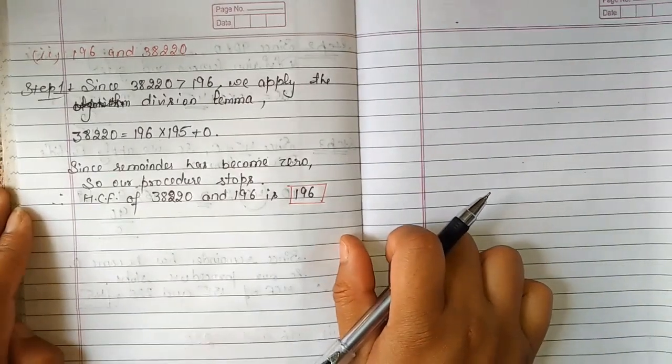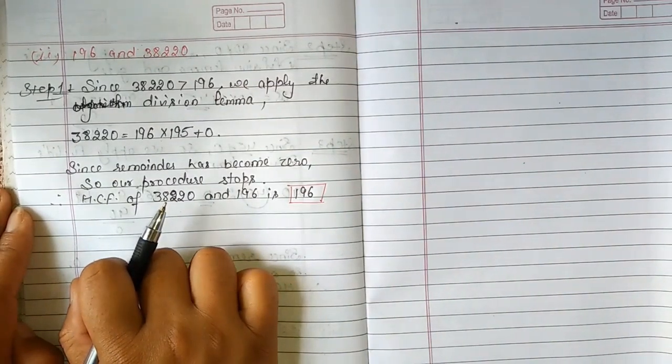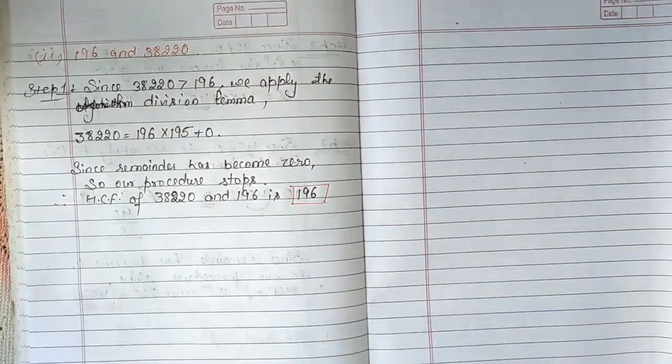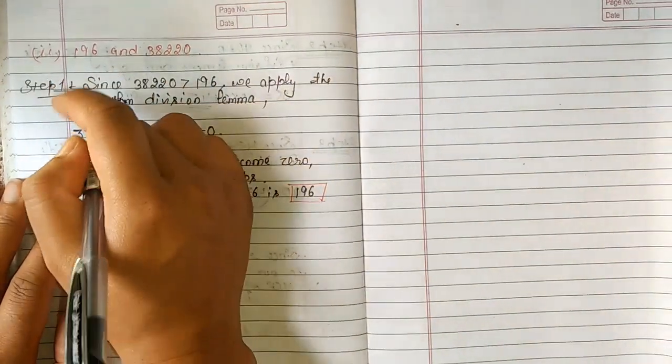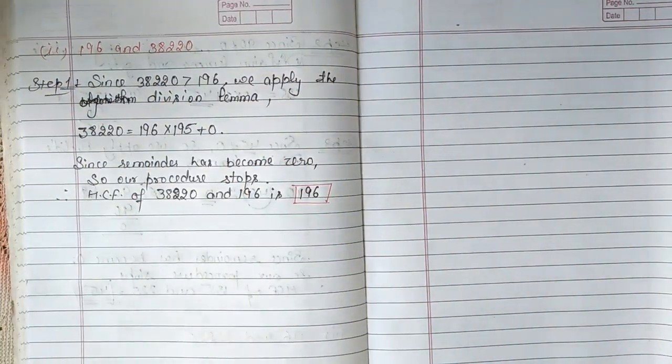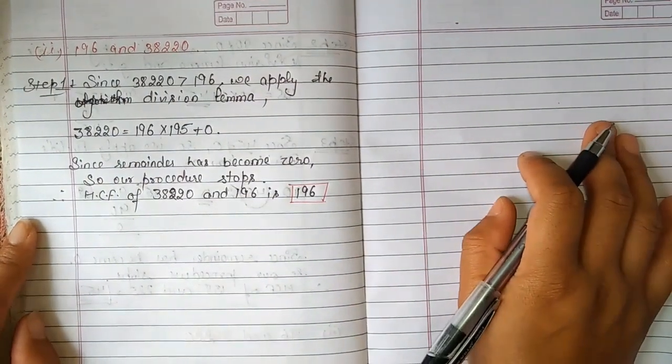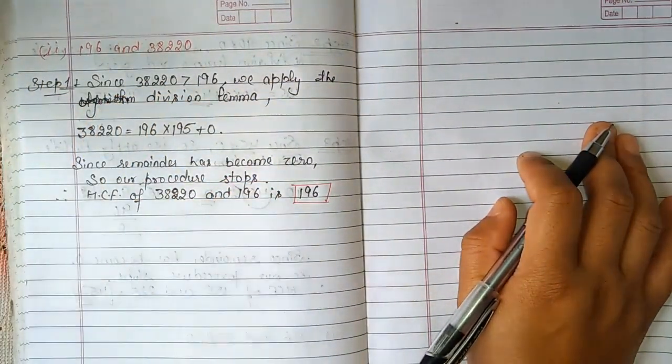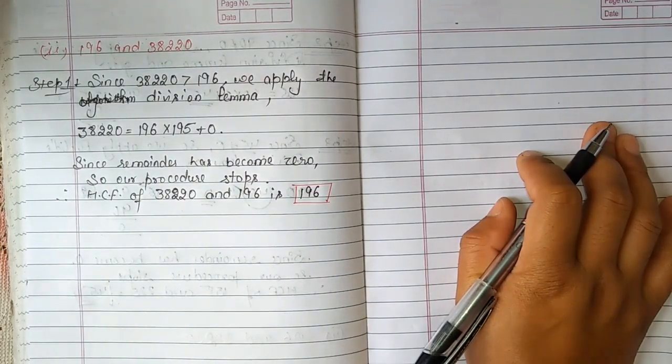Now the next question is: you have to find the HCF of 196 and 38220. So first step, we will see from these two which is greater. The greater one becomes dividend and the smaller number becomes divisor.